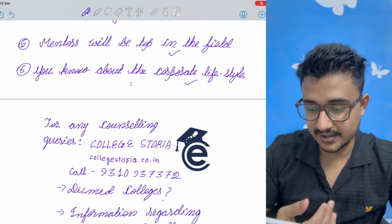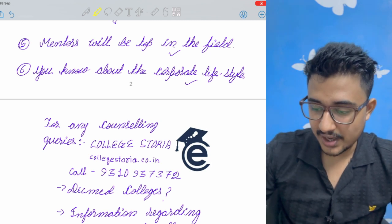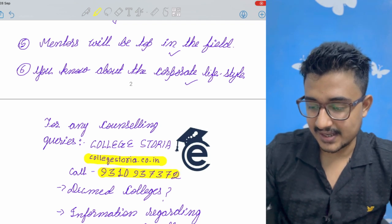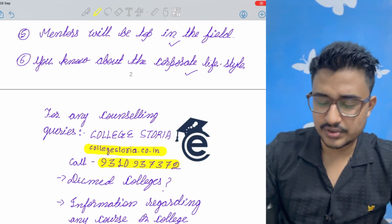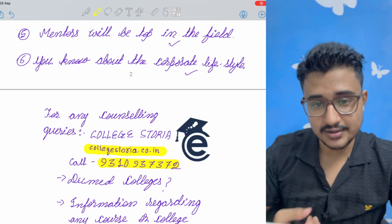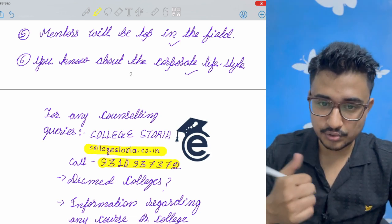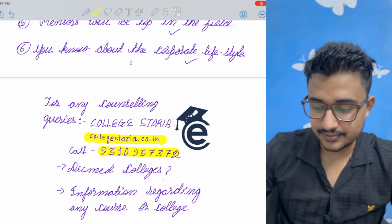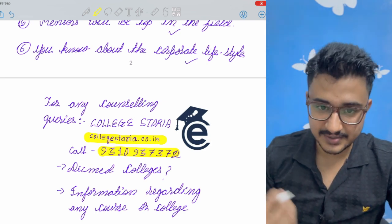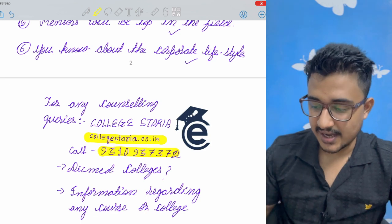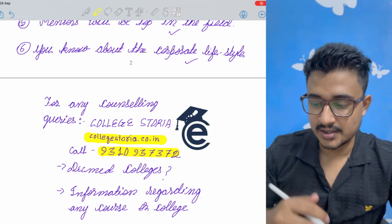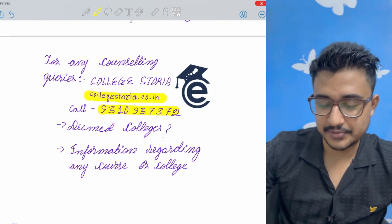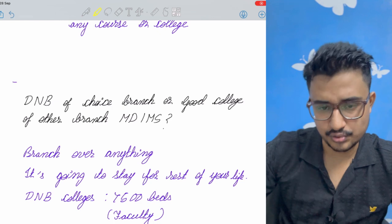So you can go and visit this website called collegestoria.co.in and here the calling number is also given. So if you have any queries regarding which college to choose or counselling related Coebi queries, you can directly call to them and ask for help. And if you need any information about deemed colleges, how to get admission in deemed colleges and information regarding any course or any college, you can just go to their website and you can call them also. So the link of the website is given in the description box below and do check it.